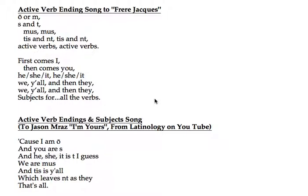A nice part about this song is that each little verse has the subject paired with the Latin ending — the English subject that that ending translates to. So that's nice. Just as a reminder though, some of the tenses don't use O for the I form of the verb; some of them use M as the ending. So just remember that and you'll be good here. That is expressed in the other song.